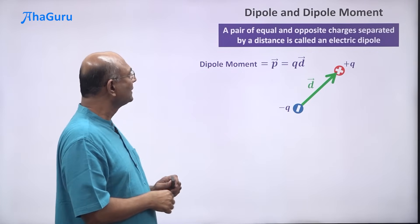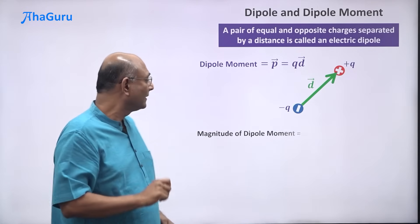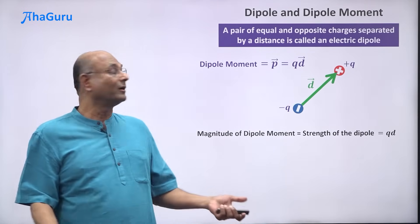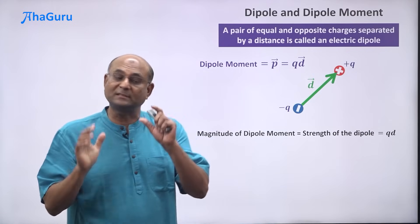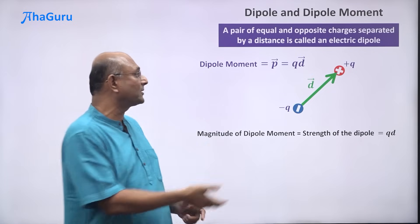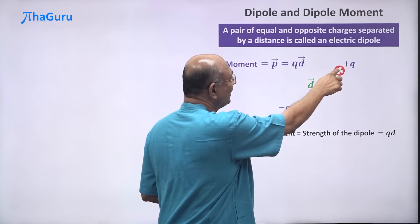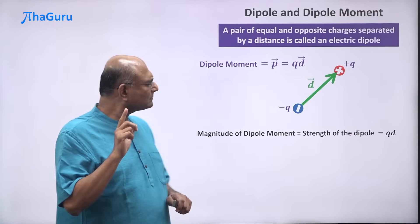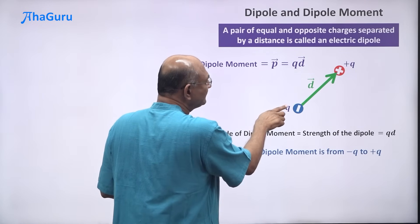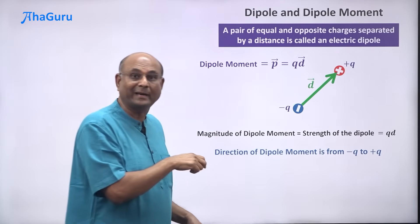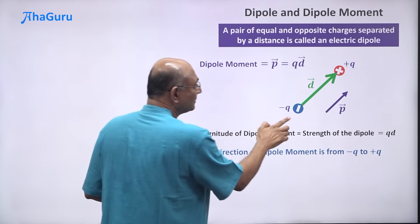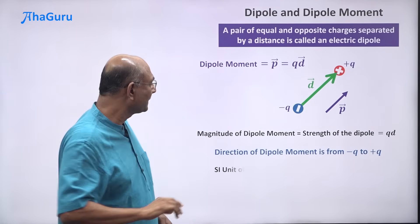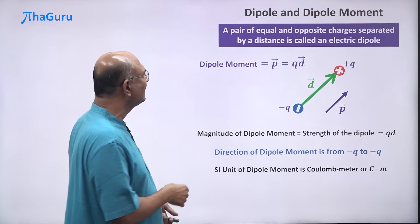The dipole moment p vector is q times d vector. The magnitude of the dipole moment is also called the strength of the dipole. The net charge on a dipole is zero, since you have a minus and a plus charge. The strength of the dipole comes from the product of the charge and the distance between them. The direction of the dipole moment is always from the negative charge to the positive charge.